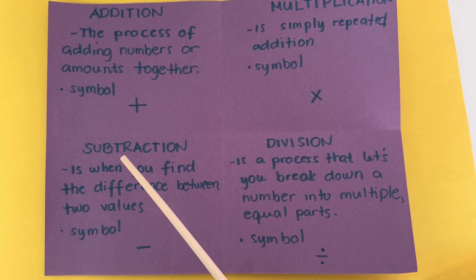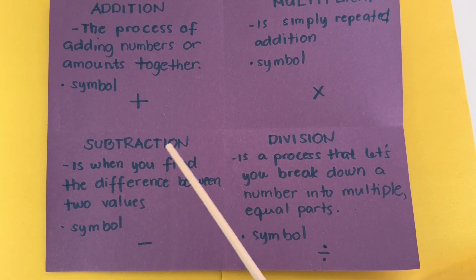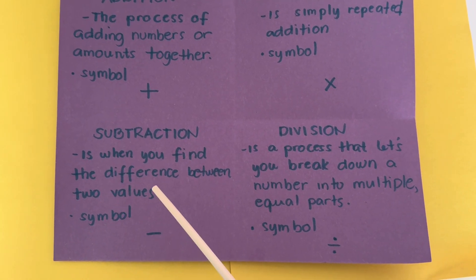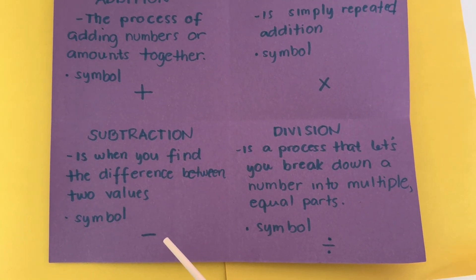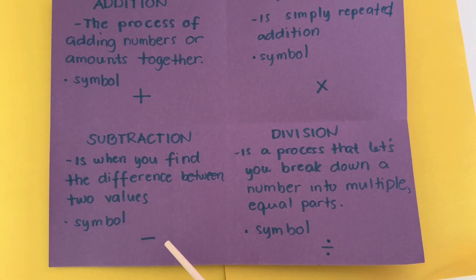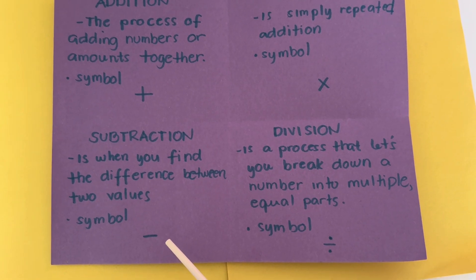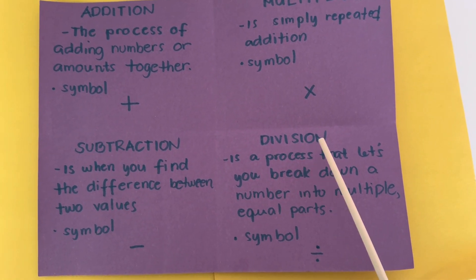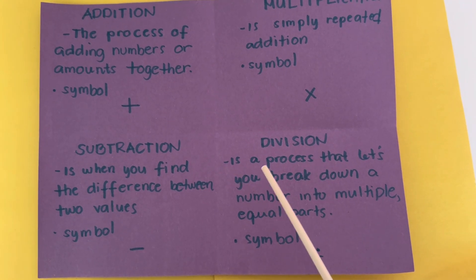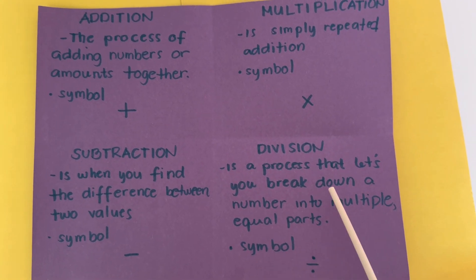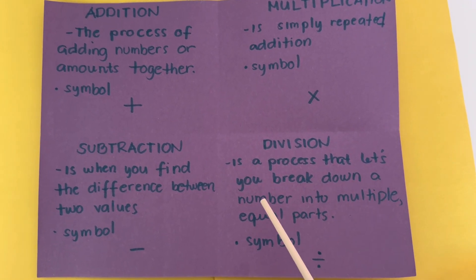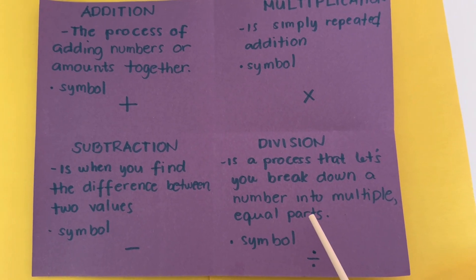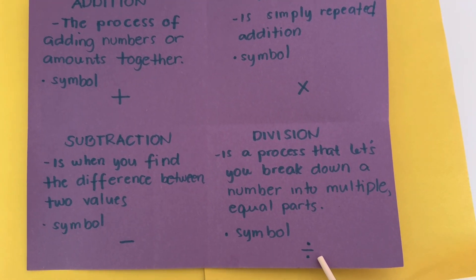Next is subtraction. Subtraction is when you find the difference between two values, and here is the symbol. And lastly, division. Division is a process that lets you break down a number into multiple equal parts, and here is the symbol.